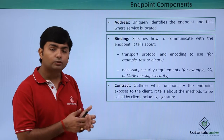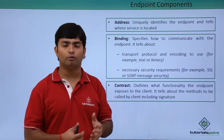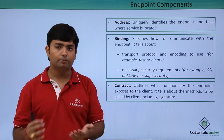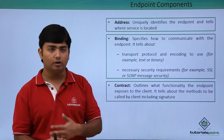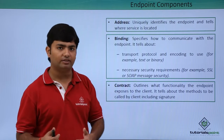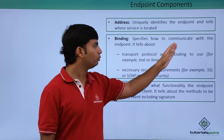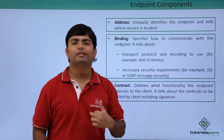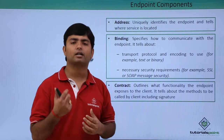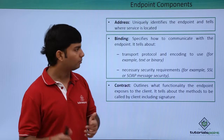WCF offers different kinds of communication — using HTTP or other protocols like TCP, MSMQ, and others. On the basis of that, we have different bindings, which stands for B. Binding specifies how to communicate with the endpoint. Once we have the location, binding will tell us how to make the communication.